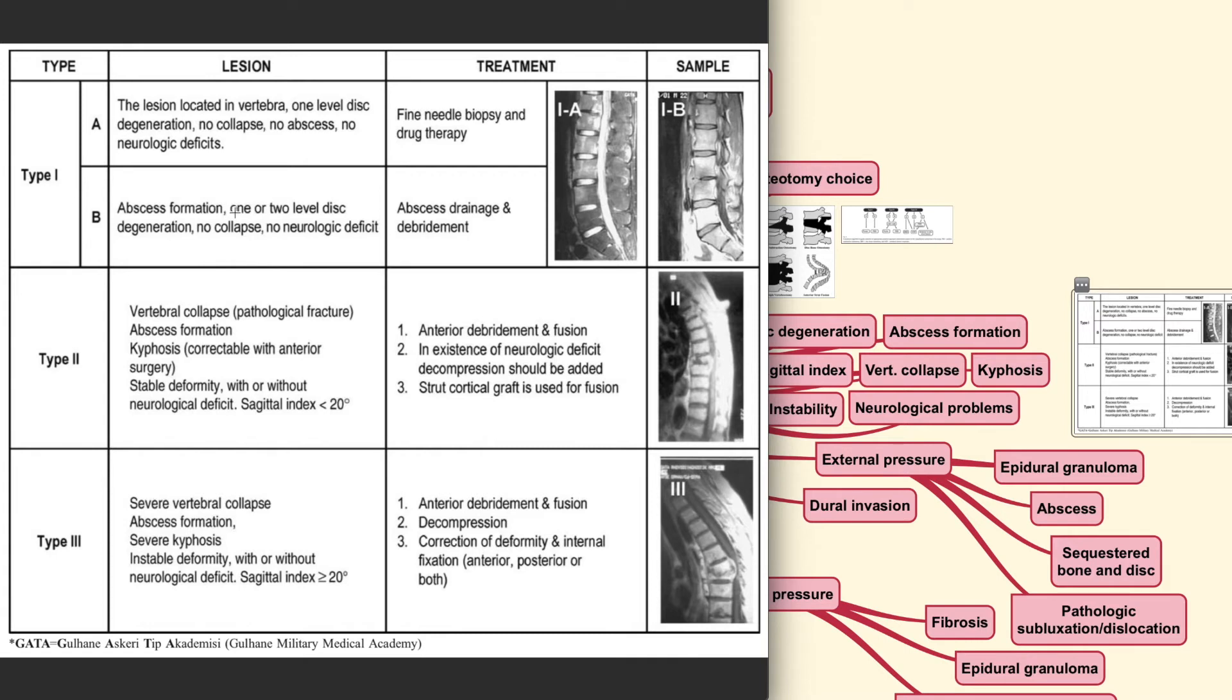While in the type 2A, you can usually find an abscess collection where abscess drainage and debridement is usually indicated. For the type 2 type of lesion, you usually could find some level of vertebrae collapse or pathological fracture because of the bony involvement. But you could also see here that there are some type of kyphosis which is still correctable with anterior surgery. The treatment choice for this type of condition includes debridement and fusion type of surgery.